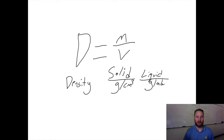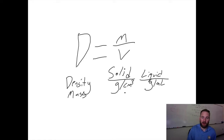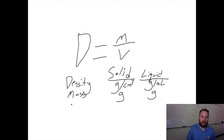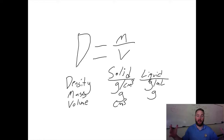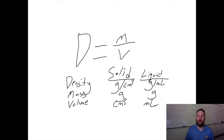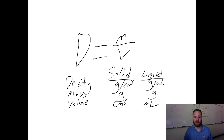Mass is easy — whether liquid or solid, it's going to be grams, sometimes kilograms, but 99 times out of 100 we're going to use grams. For volume: a solid is going to be centimeters cubed, which you find using length times width times height. In a graduated cylinder you measure the volume of a liquid in milliliters. So know the density formula — density equals mass divided by volume — and know those units.